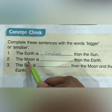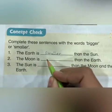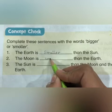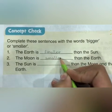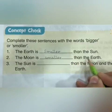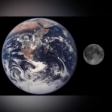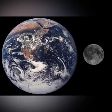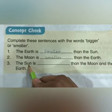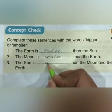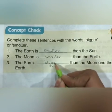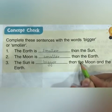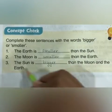Number two: the moon is smaller than the earth, so write 'smaller than the earth'. Number three: the Sun is bigger — say 'bigger' — than the moon and the earth.